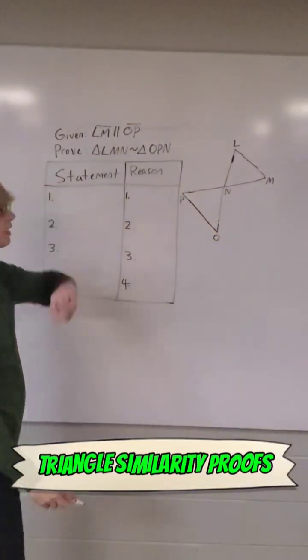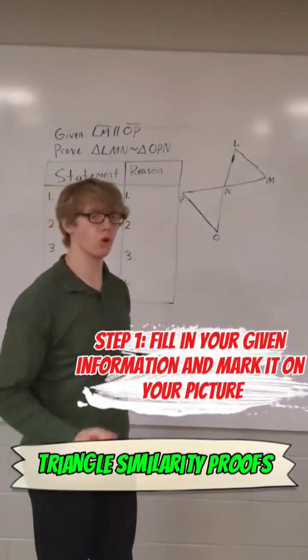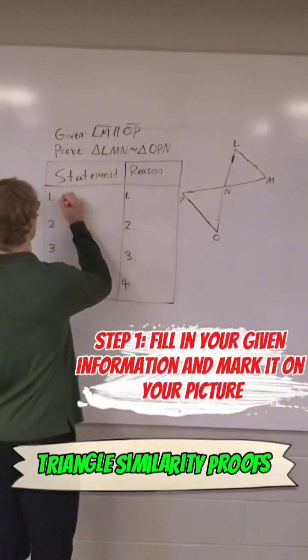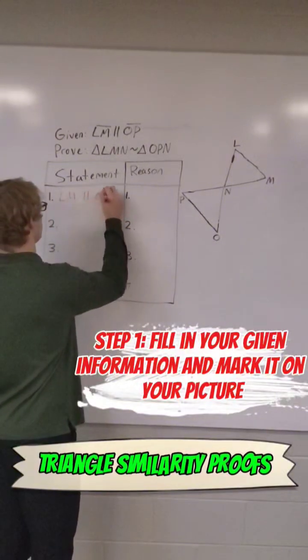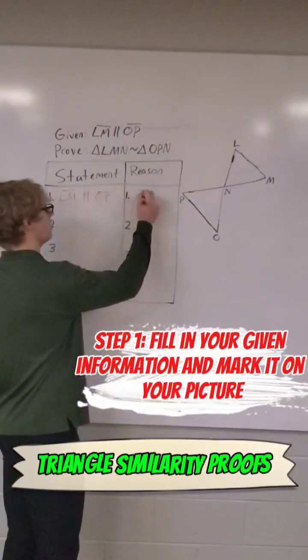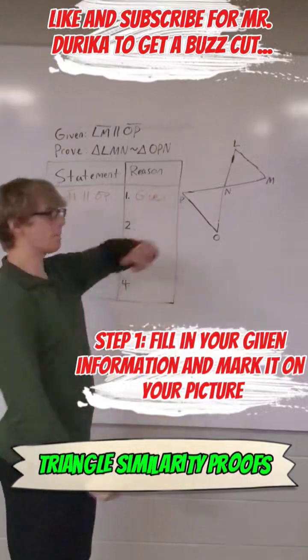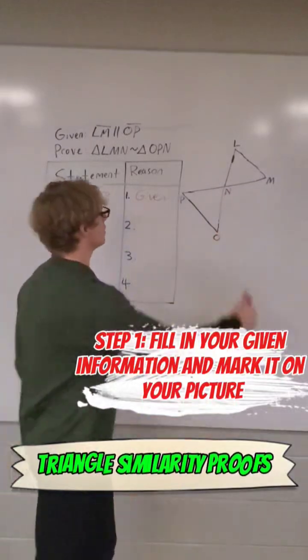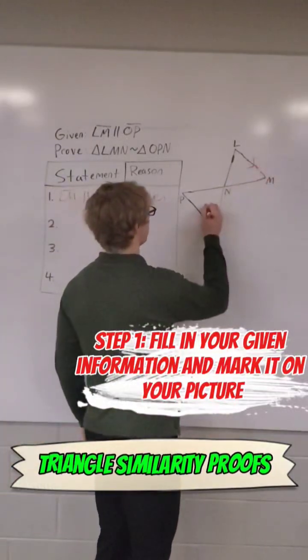So let's take a look up here. We are given that LM is parallel to OP. So I'm going to mark that over here, LM is parallel to OP. Our reason is it was given to us, and I'm always going to mark the picture with that information.